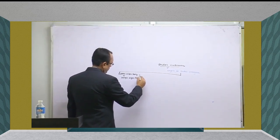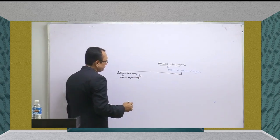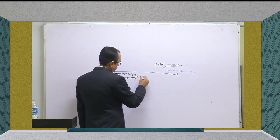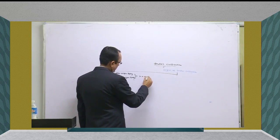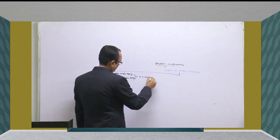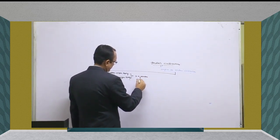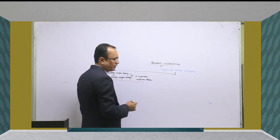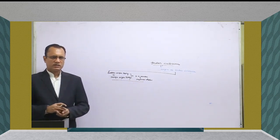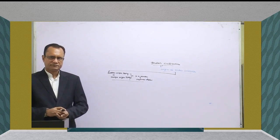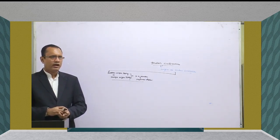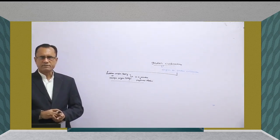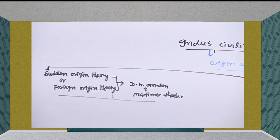This foreign origin theory is proposed by D.H. Gordon and Mortimer Wheeler. They were foreigners, and they tried to interpret the origin of Indus civilization according to an imperialistic view of history.